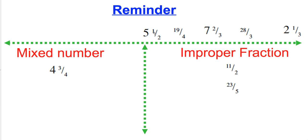5 and a half must be a mixed number. 19 over 4 is going to be an improper fraction. 7 and 2 thirds is a mixed number. 28 over 3 is an improper fraction, and finally 2 and 1 third is a mixed number.